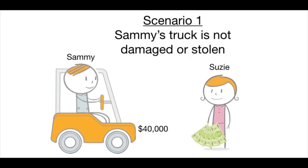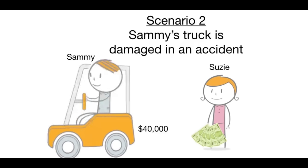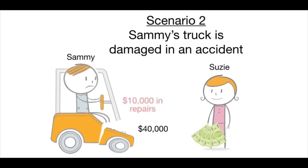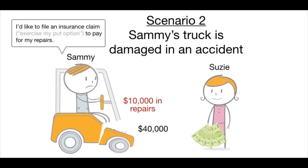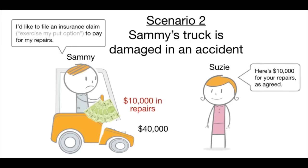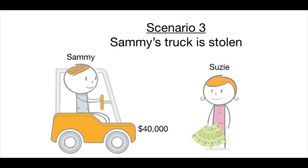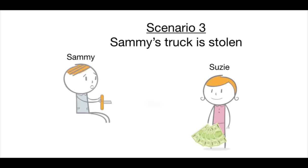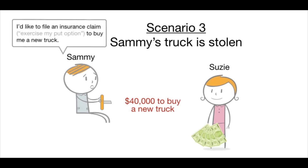Three things could happen. In the first scenario, Sammy's truck is not damaged or stolen during the year, so Susie keeps the $1,500 premium. Sammy is okay with losing the $1,500 for the protection it provided him for the year. In scenario two, Sammy's truck is damaged in an accident requiring $10,000 in repairs. He exercises his put option by filing a claim and Susie pays him $10,000 for the repairs as agreed. Sammy is happy he purchased protection for this possibility.